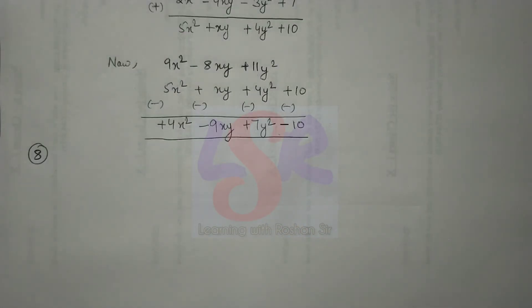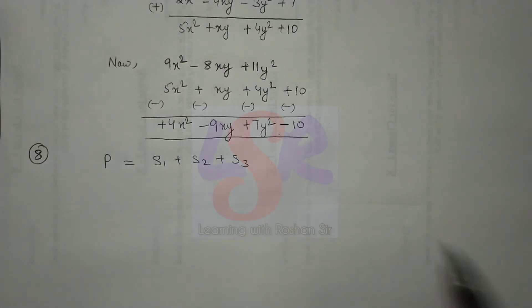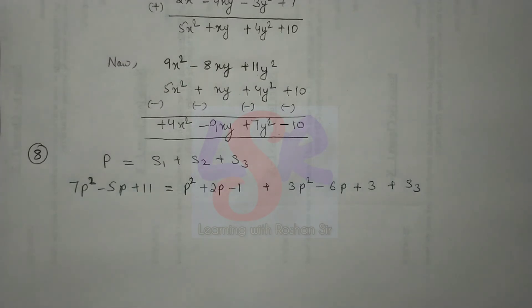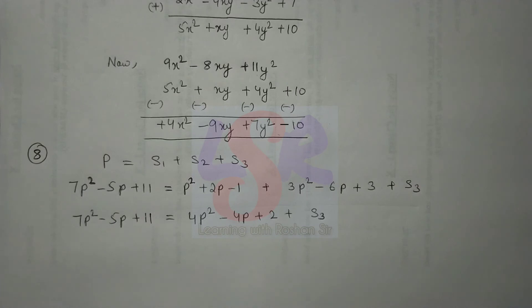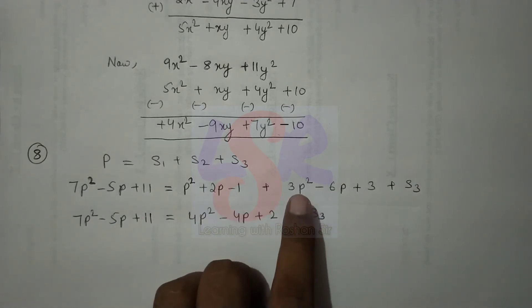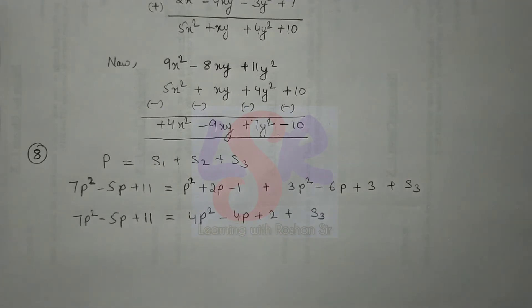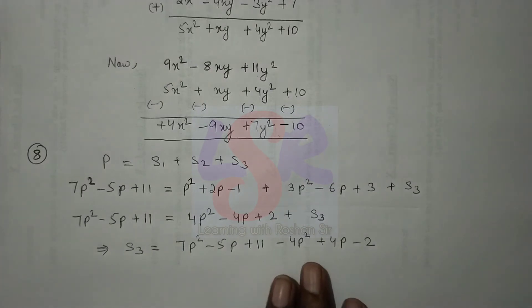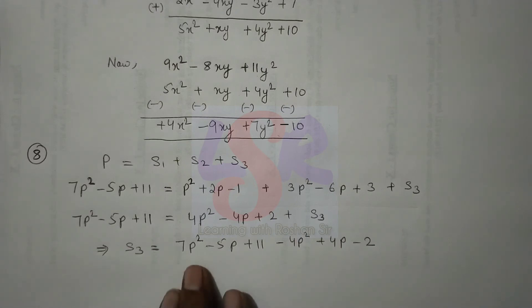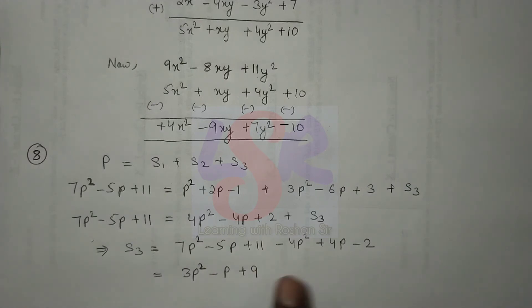In question 8, the perimeter of a triangle and two of its sides are given; we need to find the third side. The perimeter of a triangle equals the sum of all three sides. Substituting the known values and simplifying: 2p²+2p² = 4p², 2p−6p = −4p, and −1+3 = 2. Transposing to isolate the third side: 7p²−4p² = 3p², −5p+(−(−4p)) = −5p+4p = −p, and 11−2 = 9. So the third side is 3p²−p+9.